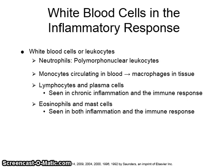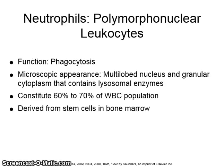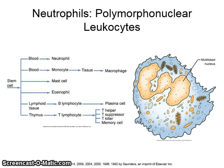White blood cells or leukocytes include neutrophils or polymorphonuclear leukocytes, and monocytes which circulate in the blood. Lymphocytes and plasma cells are seen in chronic inflammation and the immune response. Eosinophils and mast cells are seen in both inflammation and the immune response. Neutrophils or polymorphonuclear leukocytes function in phagocytosis — cell eating. Their microscopic appearance is a multi-lobed nucleus and granular cytoplasm containing lysosomal enzymes. They constitute 60 to 70% of the white blood cell population and are derived from stem cells in the bone marrow. See figures 2-11 and 2-12 on page 40 of your textbook.